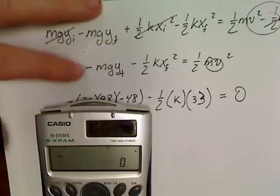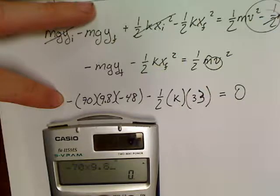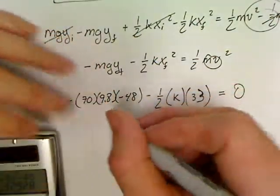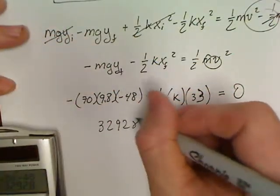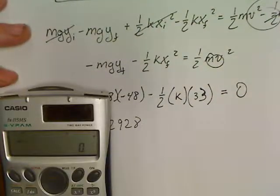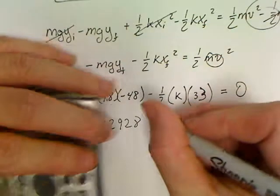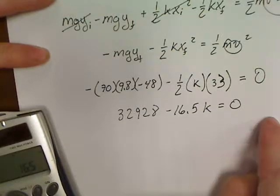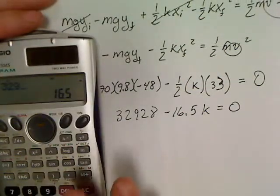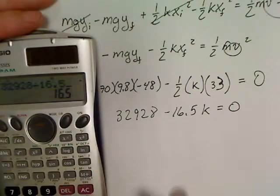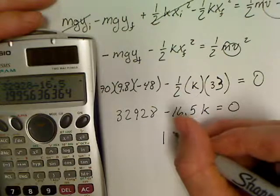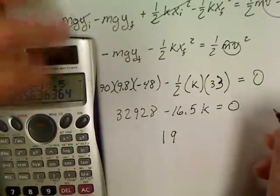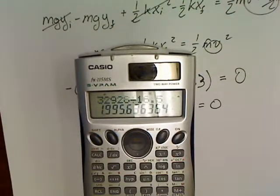If he comes to a stop, that means his final velocity is zero. Zero, zero, zero, zero. There is no change in kinetic energy, it's all zero. Kinetic energy is zero, we're looking to see how springy the spring is. We've got negative 70 times 9.8 times negative 48, so that's a big number: 32,928.